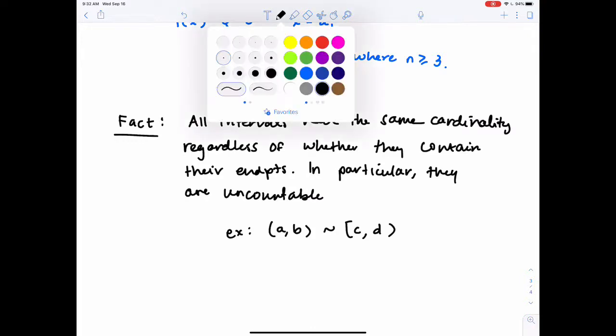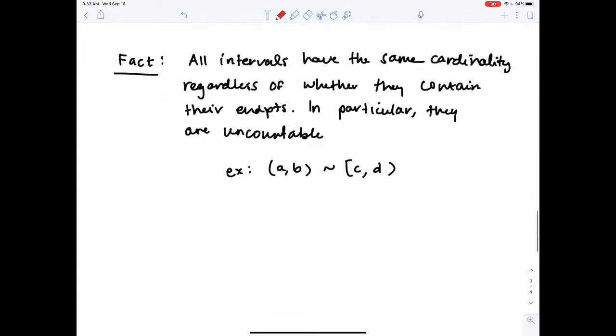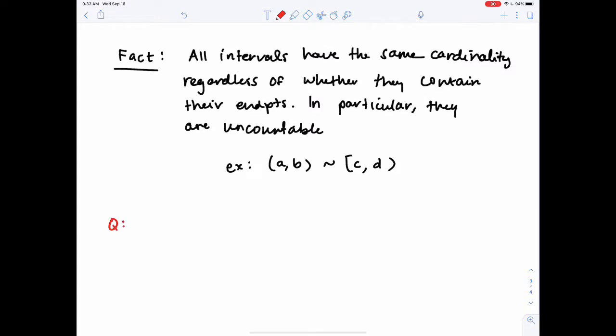And then one more thing I want to say is that we've started working with, we've said something about ℚ and we've said something about ℝ. We know that ℚ is countable and we know that ℝ is uncountable. We have not answered the question about the irrationals. So is ℐ countable or uncountable? Which one is it? I would pause your video and ask yourself, what do you think?